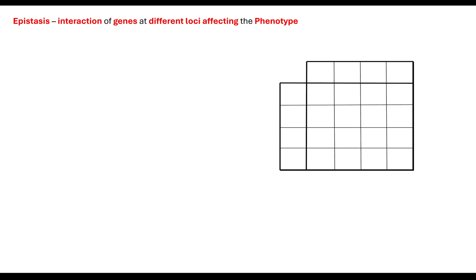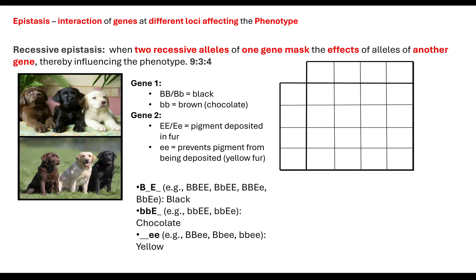So what if it's recessive epistasis? What if two recessive alleles at one gene mask the effect of another gene? If we look at Labradors, we can see Gene 1 and Gene 2. Gene 1 is to do with colour — whether they are a black Lab or a chocolate Lab. The dominant allele gives them the black colour, whereas two recessive alleles give the chocolate colour. Gene 2 determines where the pigment is deposited — either into the fur or prevented from being deposited.